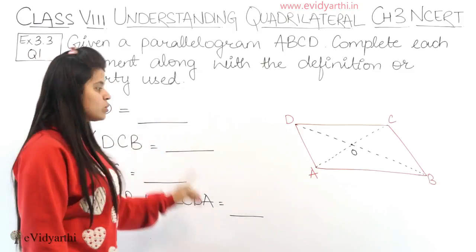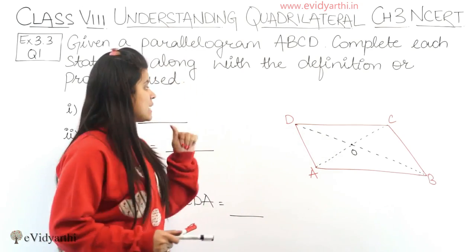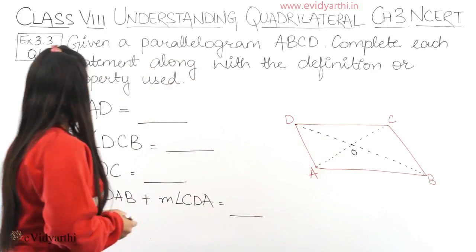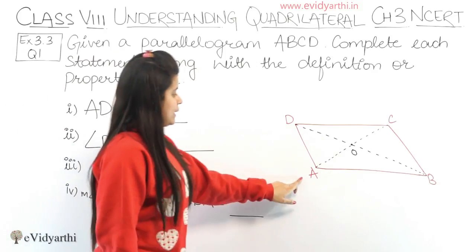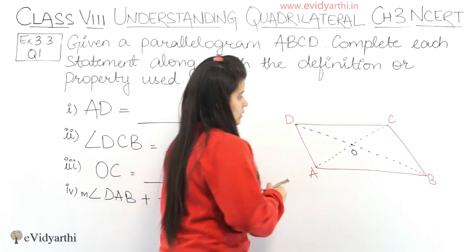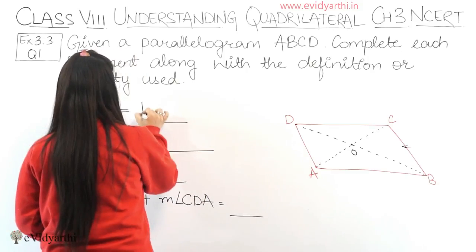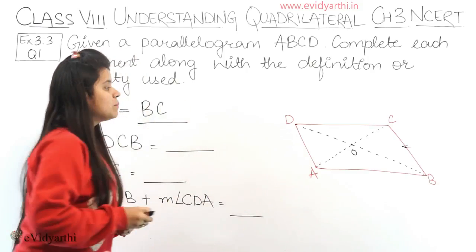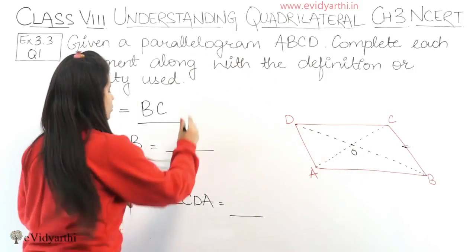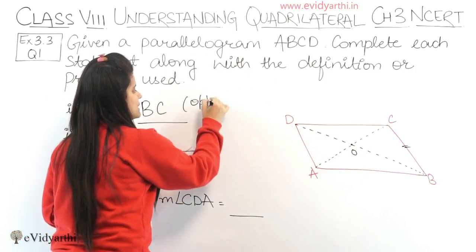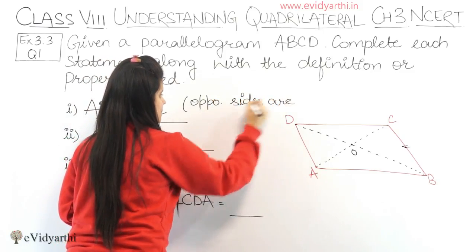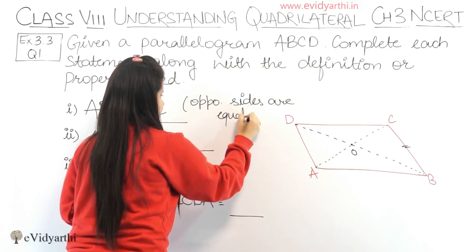The first part is: AD equals to — AD means this side — and this is equal to BC. The property used here is that in a parallelogram, opposite sides are equal.